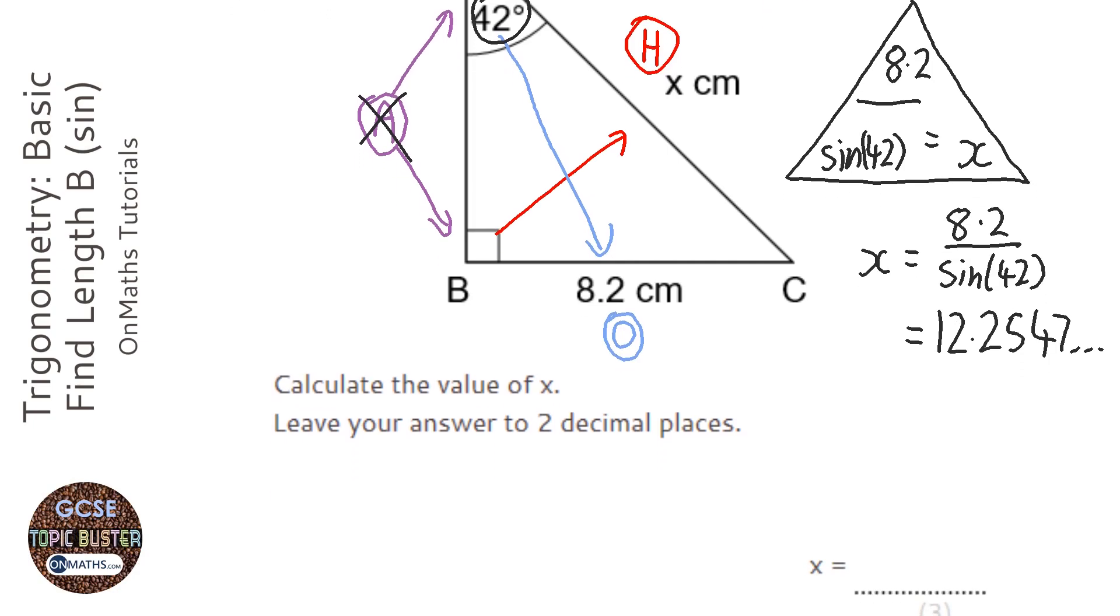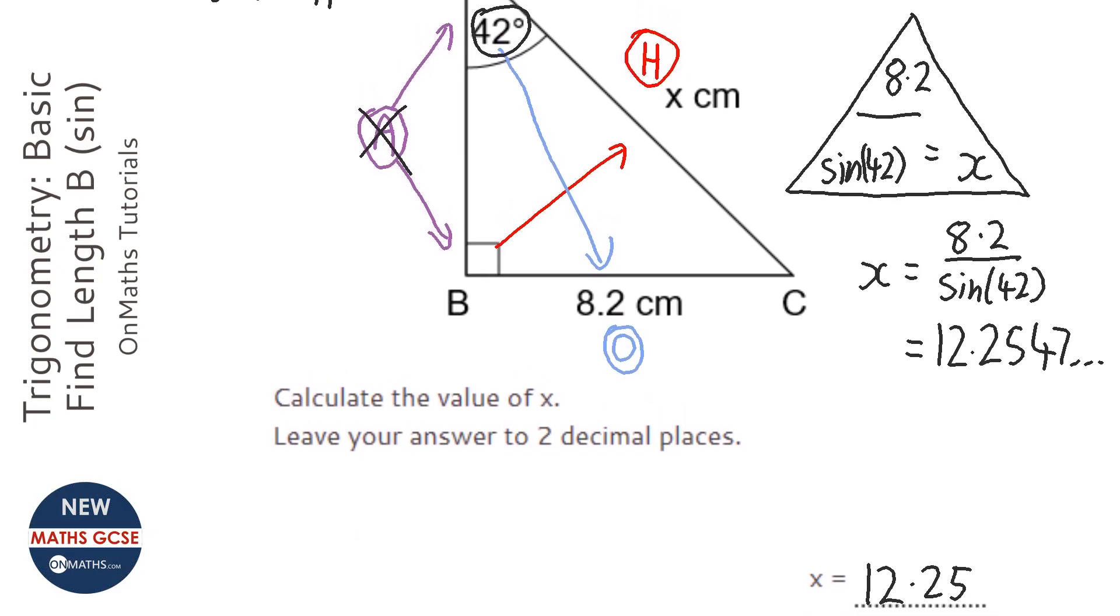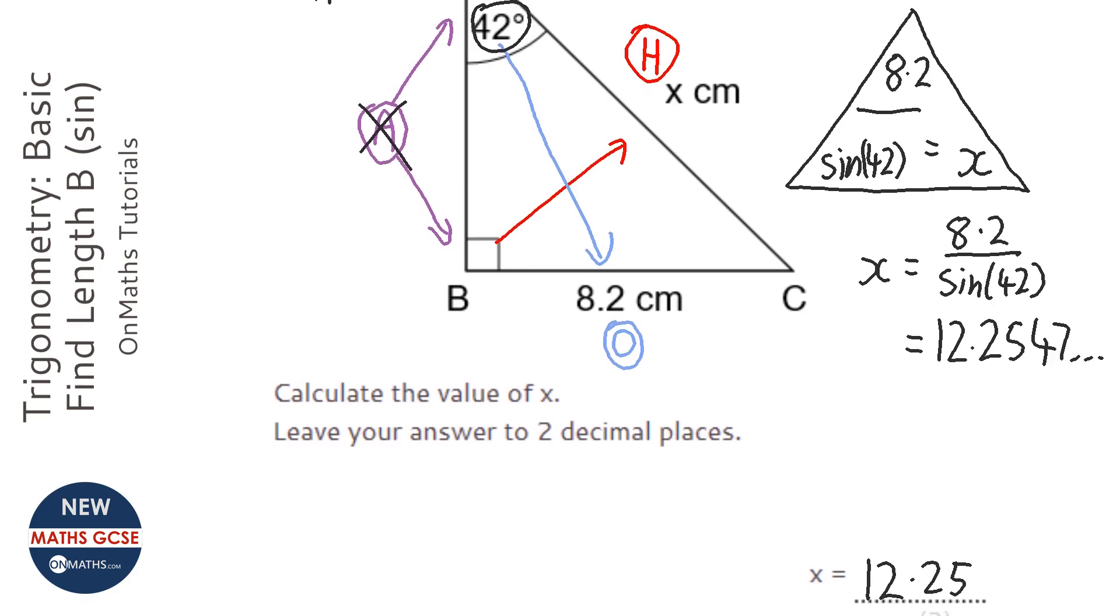It wants it to two decimal places, so I'm going to write 12.25. Check it makes sense. Well, the hypotenuse is always longer than each of the other sides, so it's bigger than 8.2, so it makes sense.